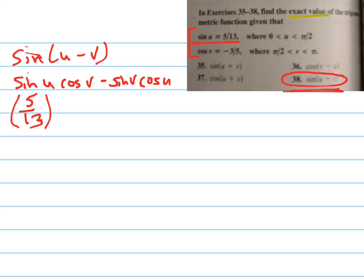And we already know what the cosine of v is. It's negative three-fifths. So that's negative three-fifths. But we don't know the sine of v or the cosine of u.